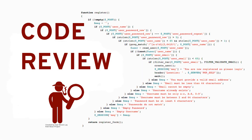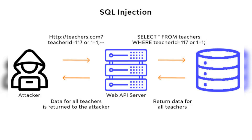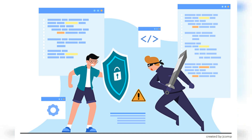Another way to test your application security is through code review. Code review involves analyzing the application's source code for security vulnerabilities, such as SQL injection or cross-site scripting (XSS) vulnerabilities. Code review can be performed manually or through automated tools, and it's important to have a team with the necessary expertise to perform a thorough code review.